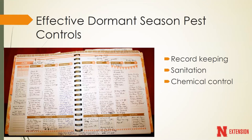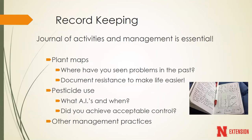Some of the effective dormant season controls: I tend to think of record keeping as one of the best things you can do during the dormant season. We typically have a longer window for treatment periods and there's not as much going on. I recommend keeping a journal of all activities in your garden, orchard, or landscape - what plants you have, what management procedures have been used. Having plant maps allows you to identify problem areas, like knowing the southeast corner of the orchard routinely has lower yield, so you can target that area.